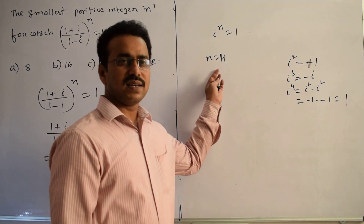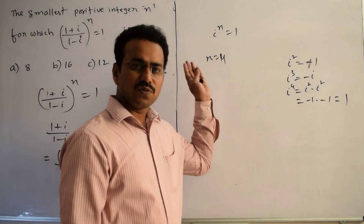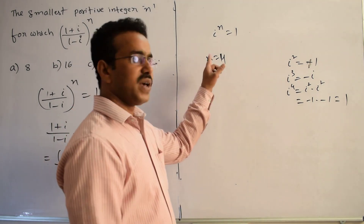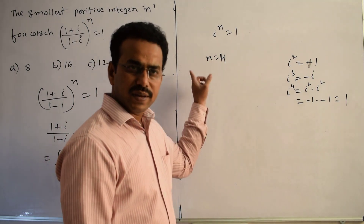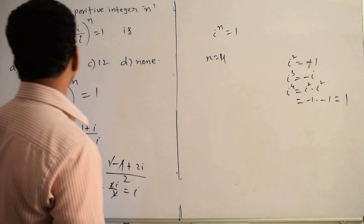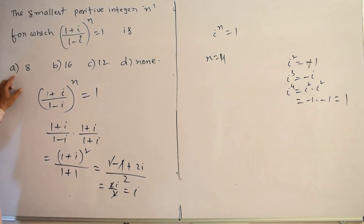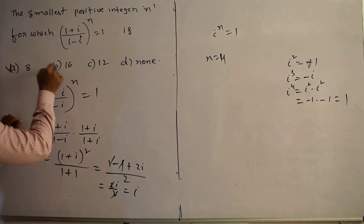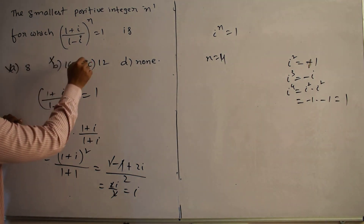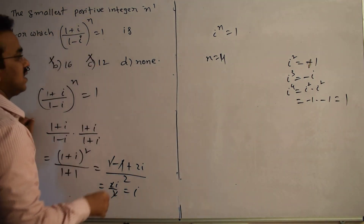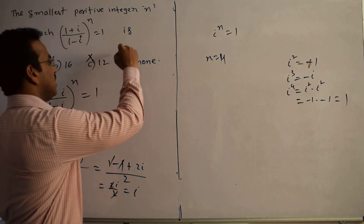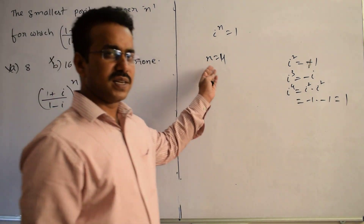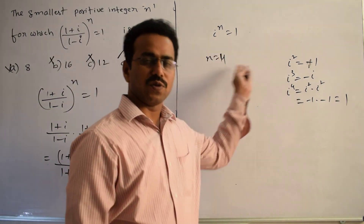So our answer is n equals 4. Comparing with the given options: option A is incorrect, 16 is incorrect, 12 is incorrect — D is the answer. Final conclusion: n equals 4.